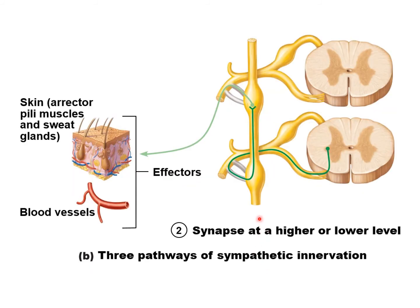Another possibility is it synapses in the chain again, but not at the level it enters. It can take an elevator up or elevator down — it could go up or down more than one level. Remember, this is the thoracolumbar division, but the chain will go past that — up into the cervicals, down into the lower lumbars. So the sympathetic chain is a way for fibers to get beyond the thoracolumbar region into other areas of the body.